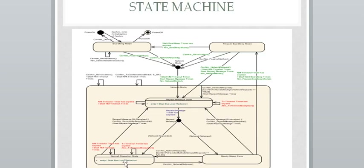If you are in Normal Operation State and you receive an NM frame with the Repeat Message Bit set from another node, there will be a transition from Normal Operation to Repeat Message State. Similarly, when in Ready Sleep State, if you receive an NM frame with the Repeat Message Bit set, there will be a transition from Ready Sleep to Repeat Message State. If you are in Ready Sleep State and CAN-NM Network Request API is called, it will move from Ready Sleep to Normal Operation State. This is the state machine present in CAN-NM.